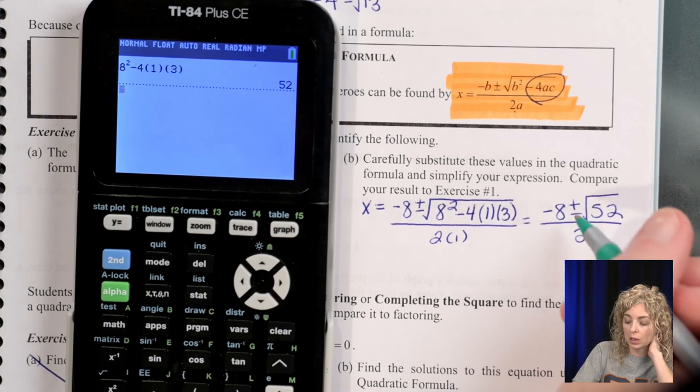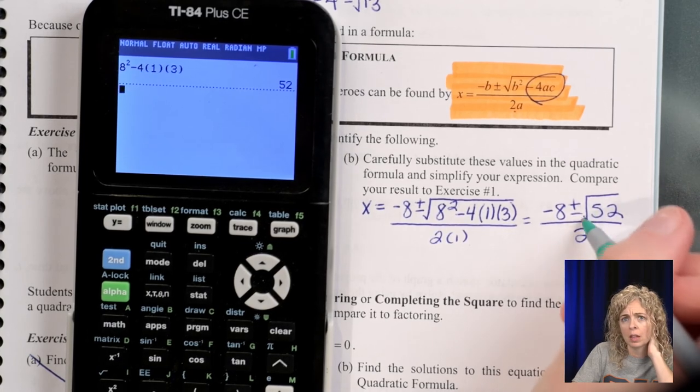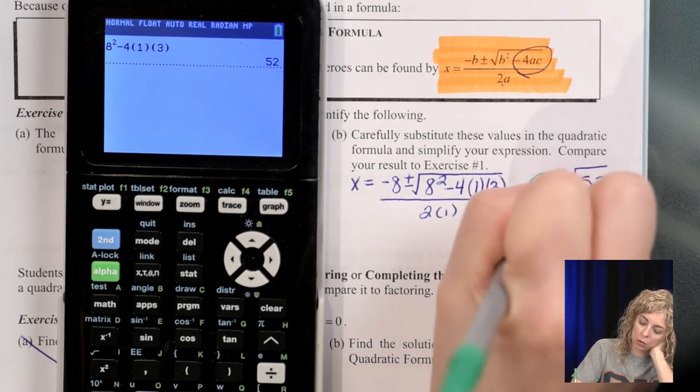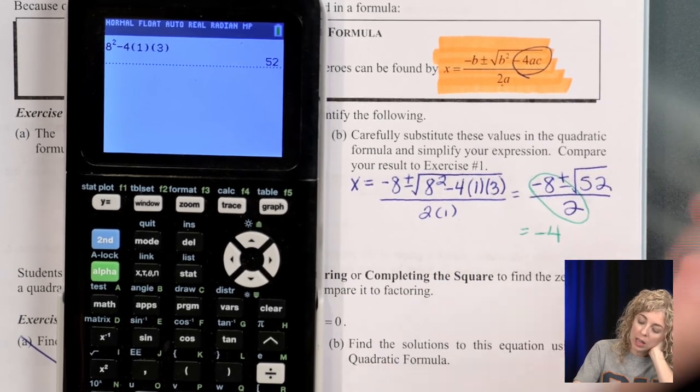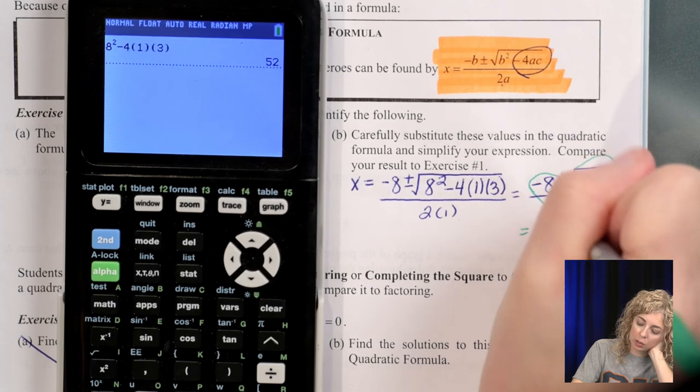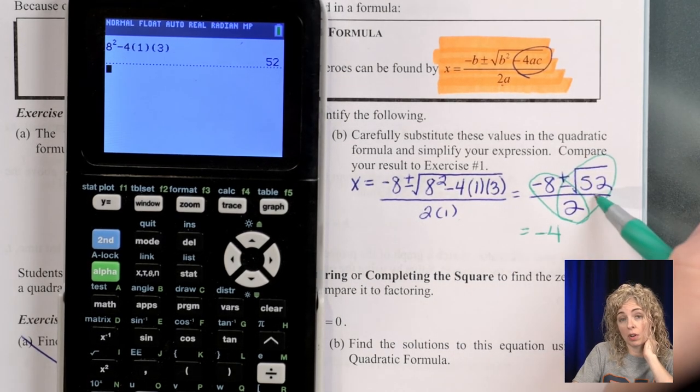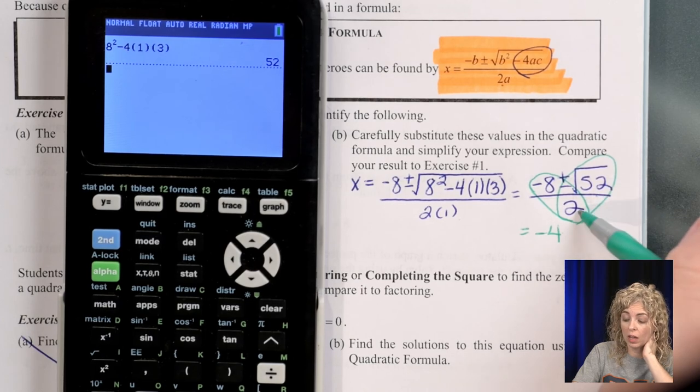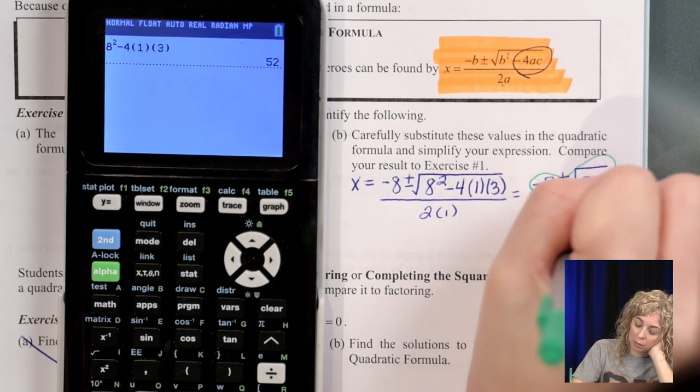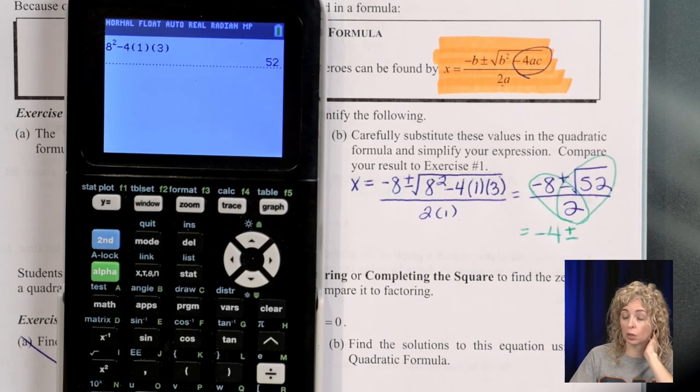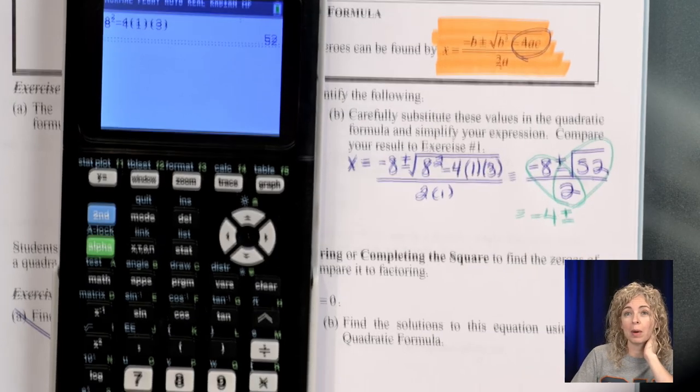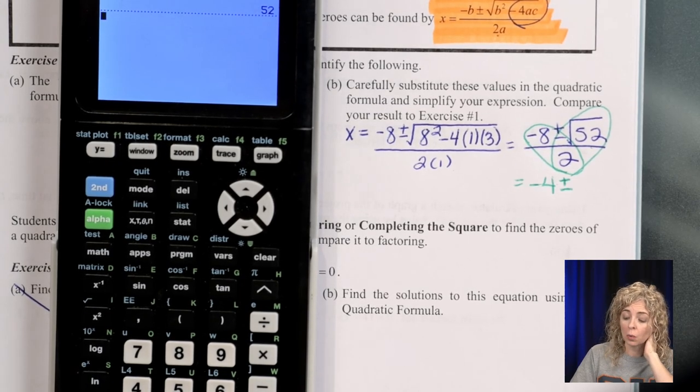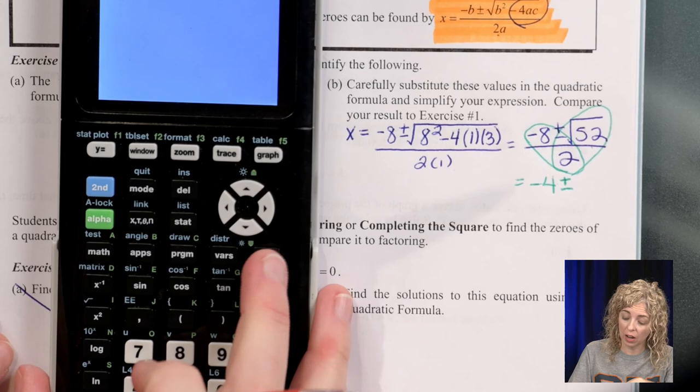Okay? So remember in the fraction, with this plus or minus, we need to divide both the negative 8 by 2, so that would be negative 4, and we need to divide this by 2. Well, because that number is underneath the radical and this is not, I cannot divide just yet. So let's simplify. So plus or minus the square root of 52.